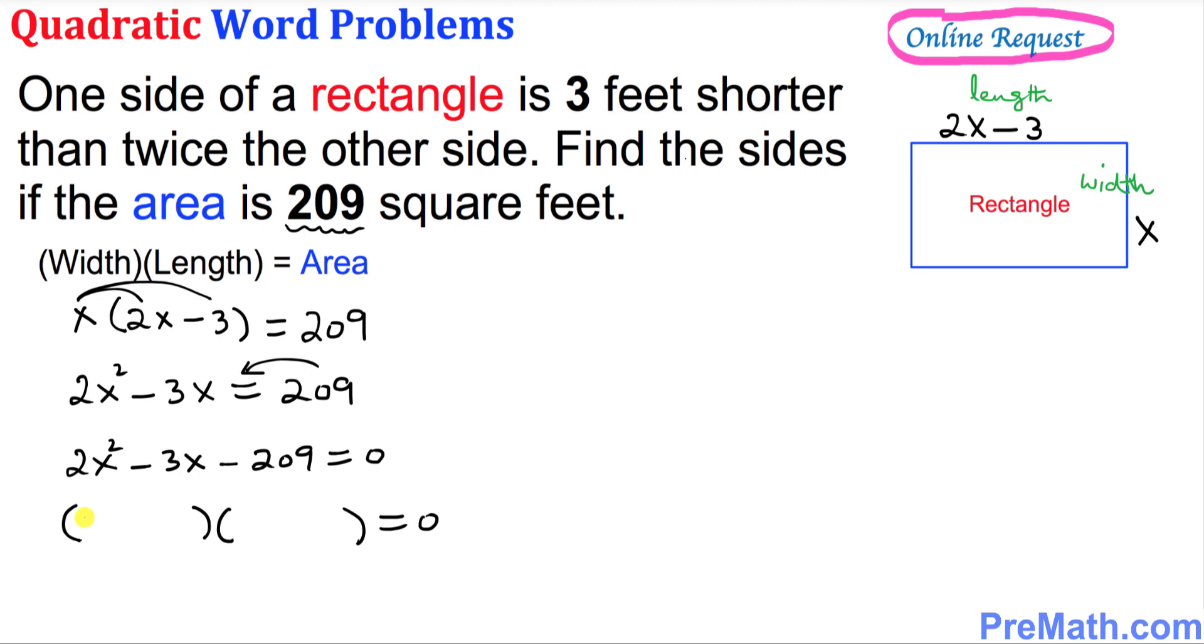In the first parentheses is going to be x minus 11 and in the second parentheses is going to be 2x plus 19.